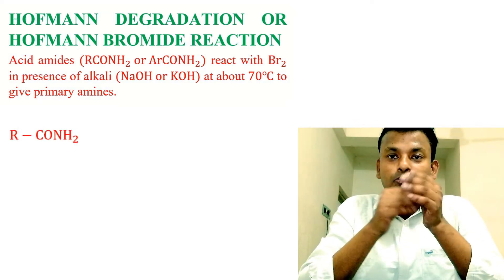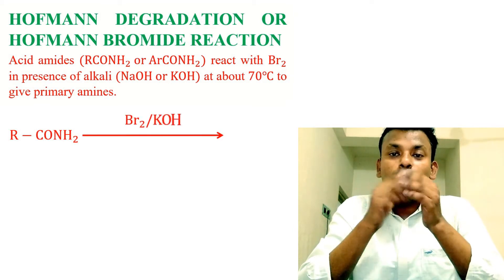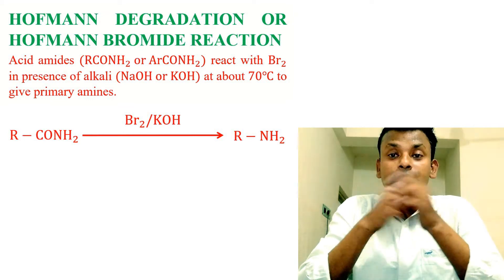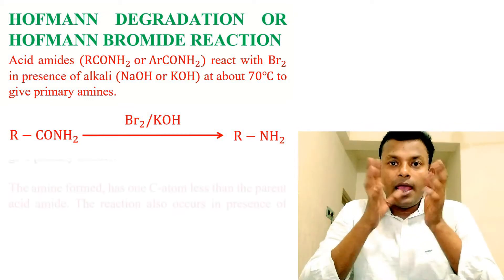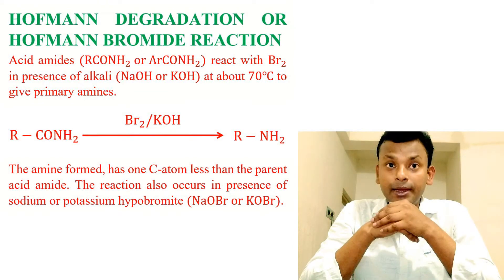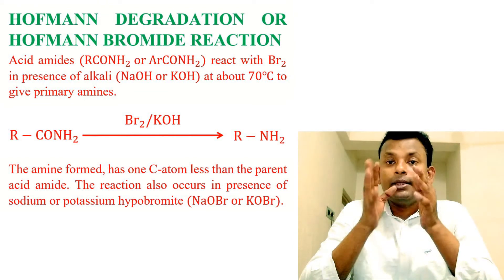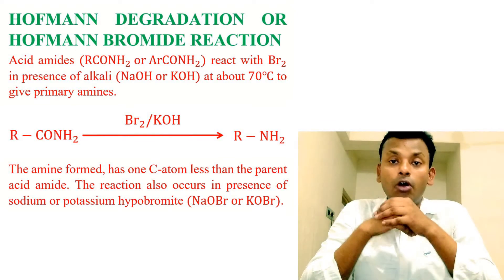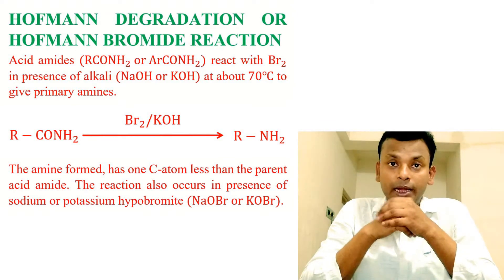RCONH2 reacts with Br2 and KOH gives RNH2, that is primary amine. The amine formed has one carbon atom less than the parent acid amide. The reaction also occurs in presence of sodium or potassium hypobromite, that is NaOBr or KOBr.